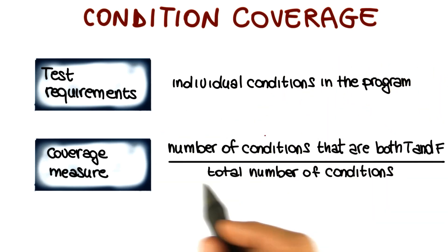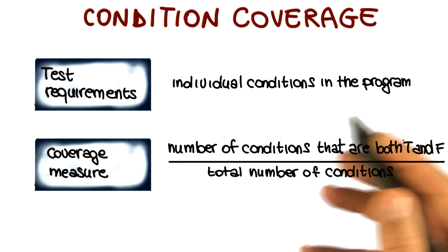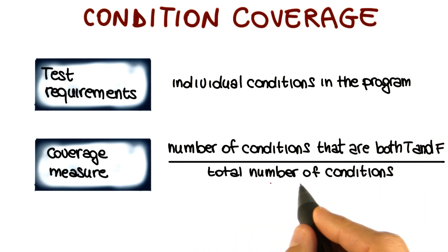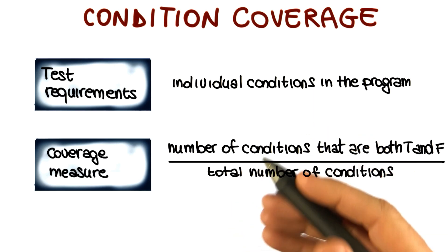So the way in which we can measure that is by measuring the number of conditions that were both true and false when we executed our tests over the total number of conditions. And that gives us the percentage of coverage that we achieved for condition coverage.